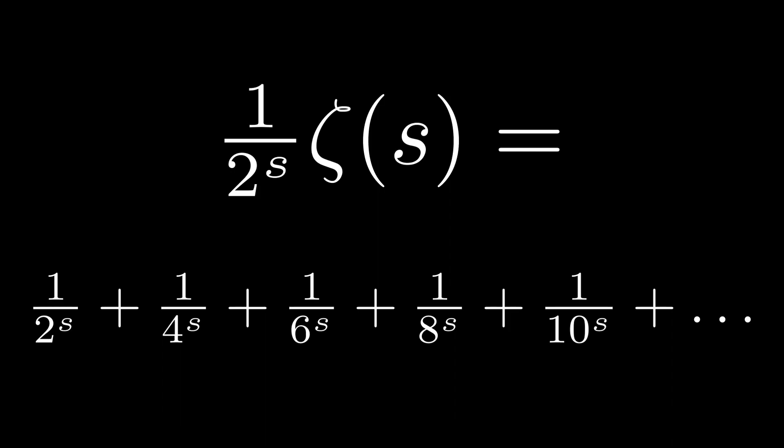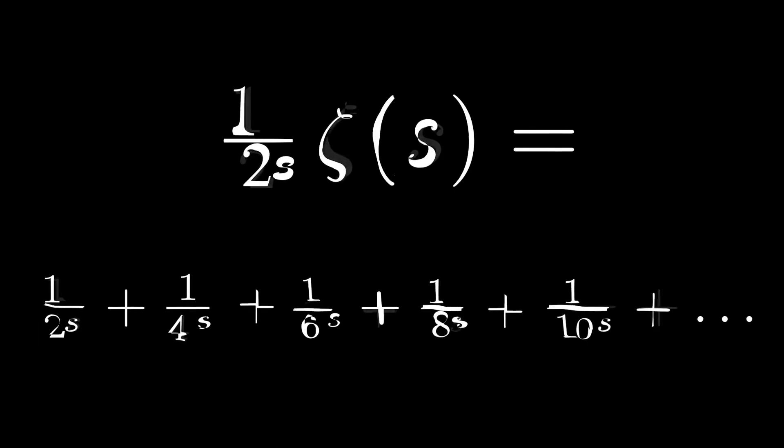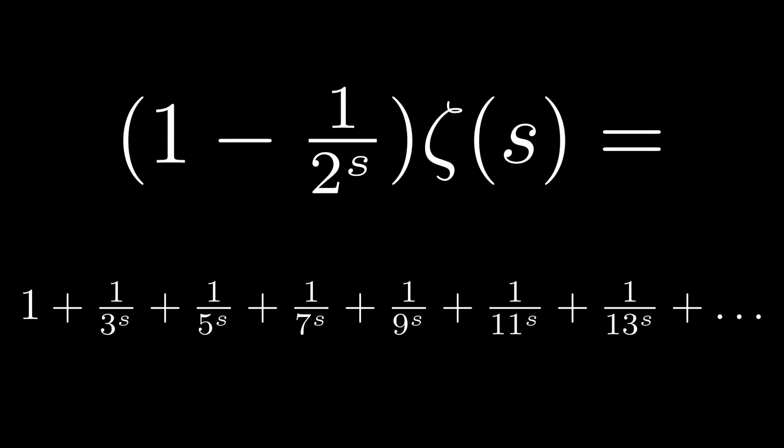Now suppose we subtract this sum, 1 over 2 to the s times ζ of s, from ζ of s. We can write this as 1 minus 1 over 2 to the s all times ζ of s. This of course subtracts off all terms from ζ of s which are of the form of a multiple of 2 to the power of negative s.